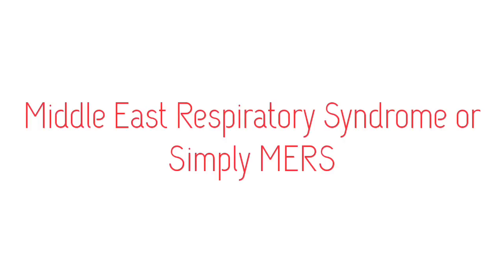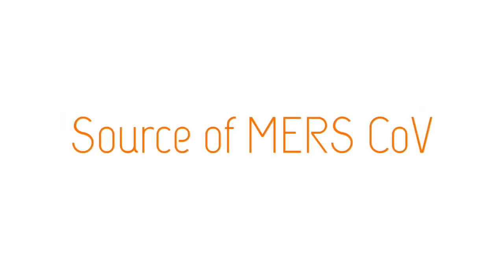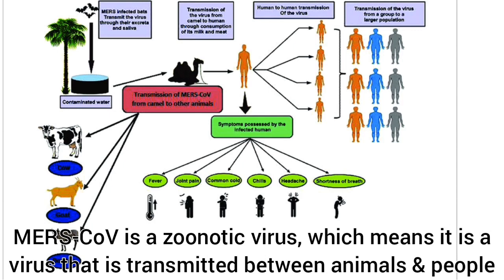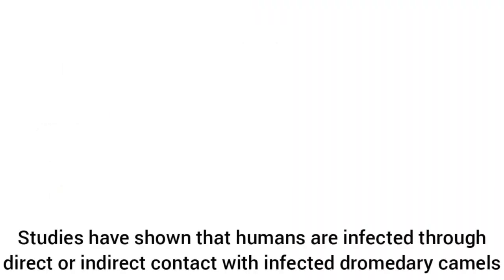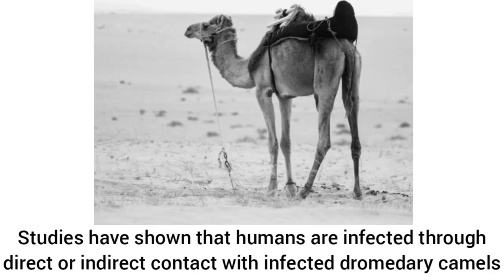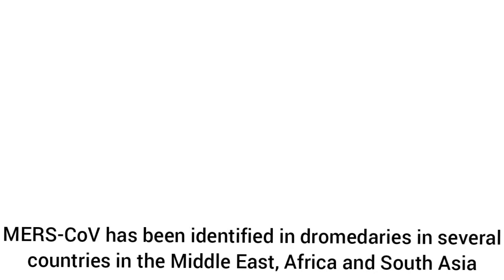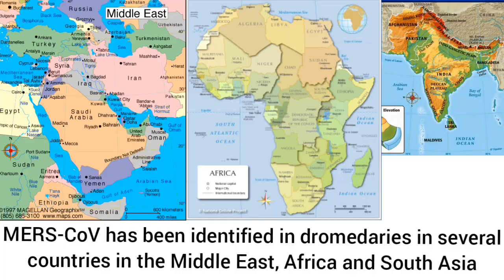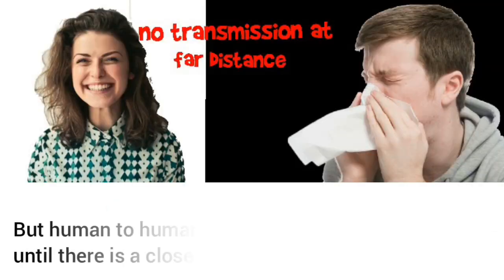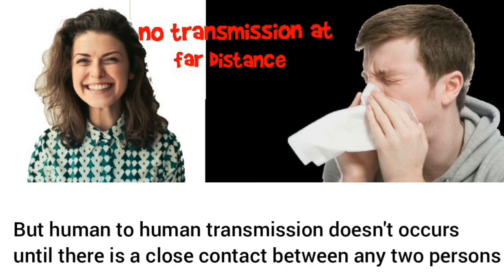Middle East respiratory syndrome, or simply MERS. MERS-CoV is a zoonotic virus, which means it is a virus transmitted between animals and people. Studies have shown that humans are infected through direct or indirect contact with infected dromedary camels. MERS-CoV has been identified in dromedaries in several countries in the Middle East, Africa, and South Asia.